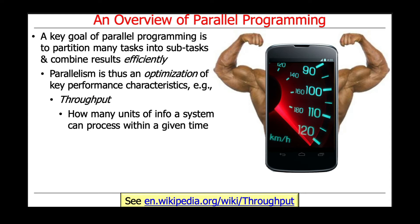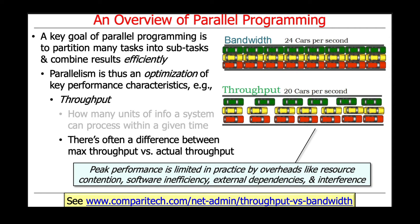One very common thing is throughput — essentially how many units of information or data that a system can process within a given period of time. The intent is to make that improve. There's often a difference in practice between the maximum possible throughput and the actual achievable throughput.